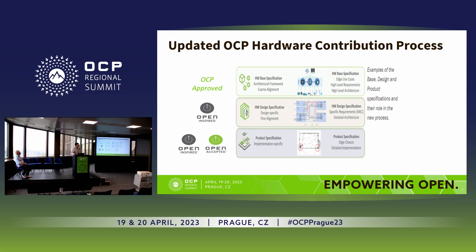The second tier would be a design specification — more specific, calling out perhaps actual components used in that design. The third level would be an actual product specification, where that specification would go over how the design is actually implemented. That's the new specification process for contributions in OCP. Someone could still contribute all three tiers in a single paper document, but now we've broken that up into three tiers to hopefully get more participation and collaboration from the community.